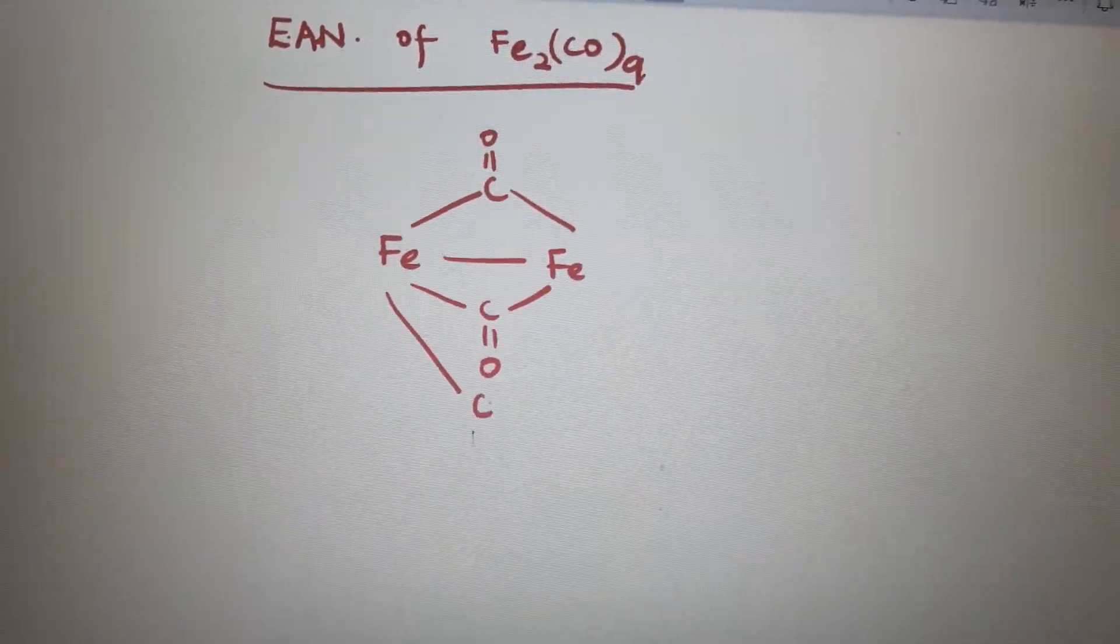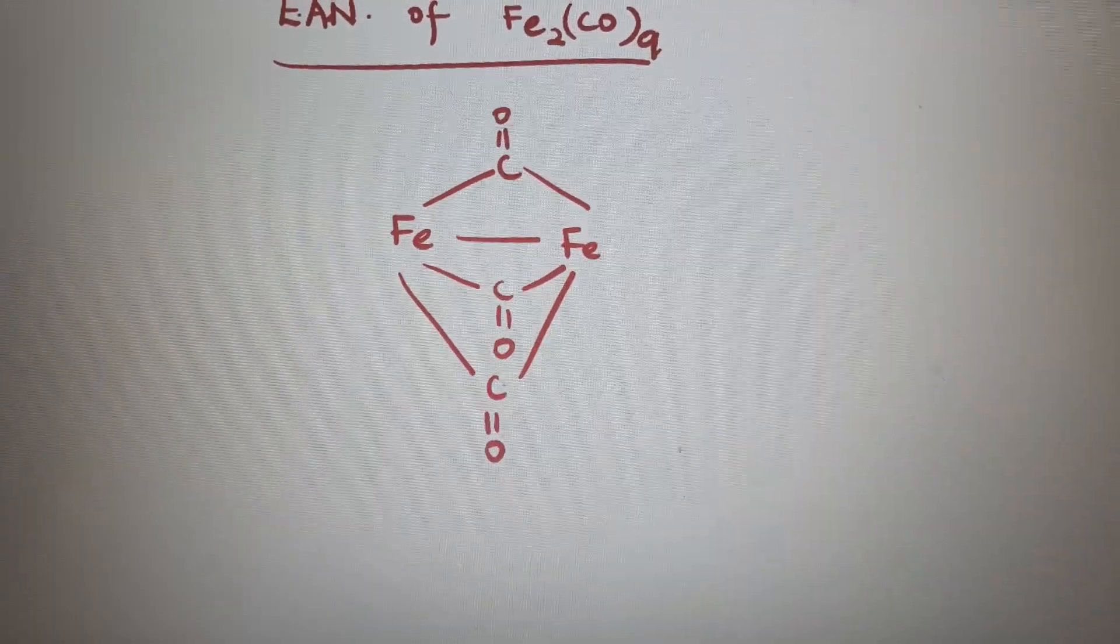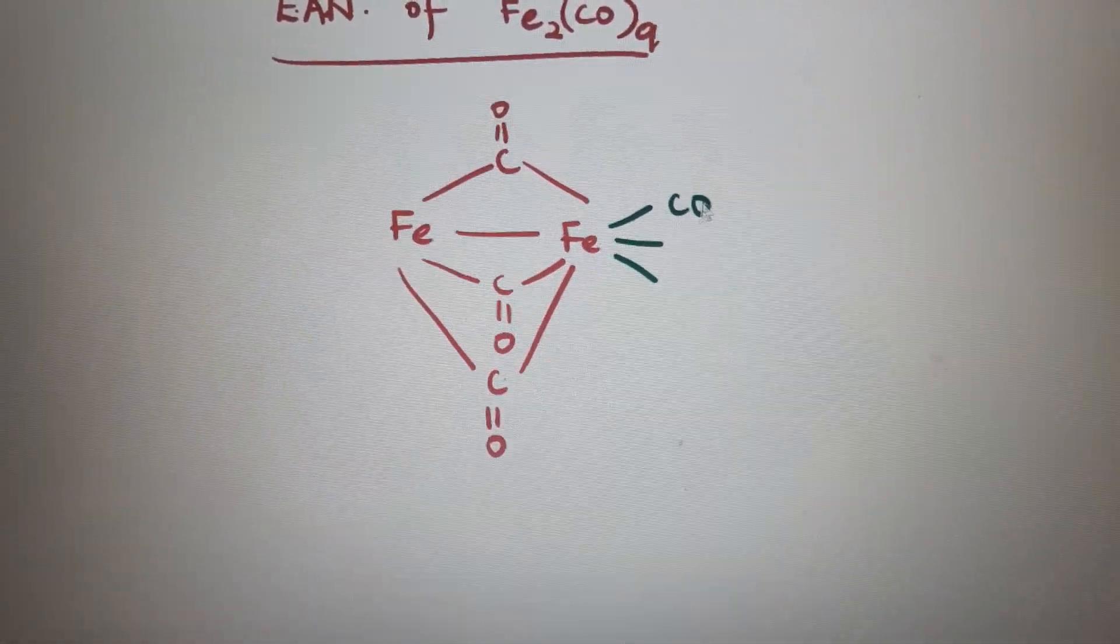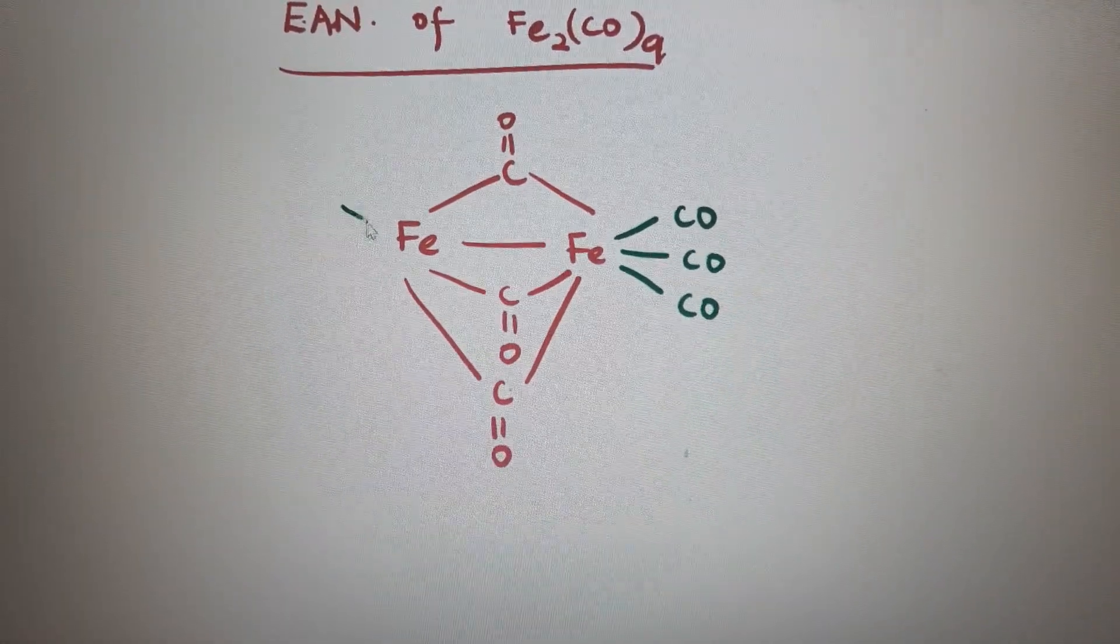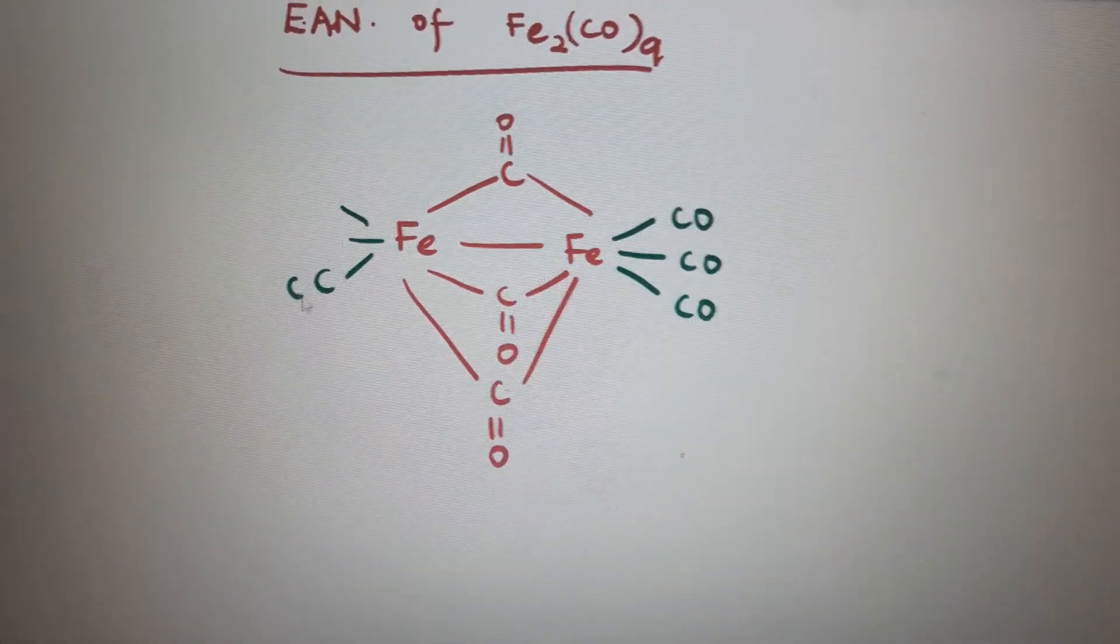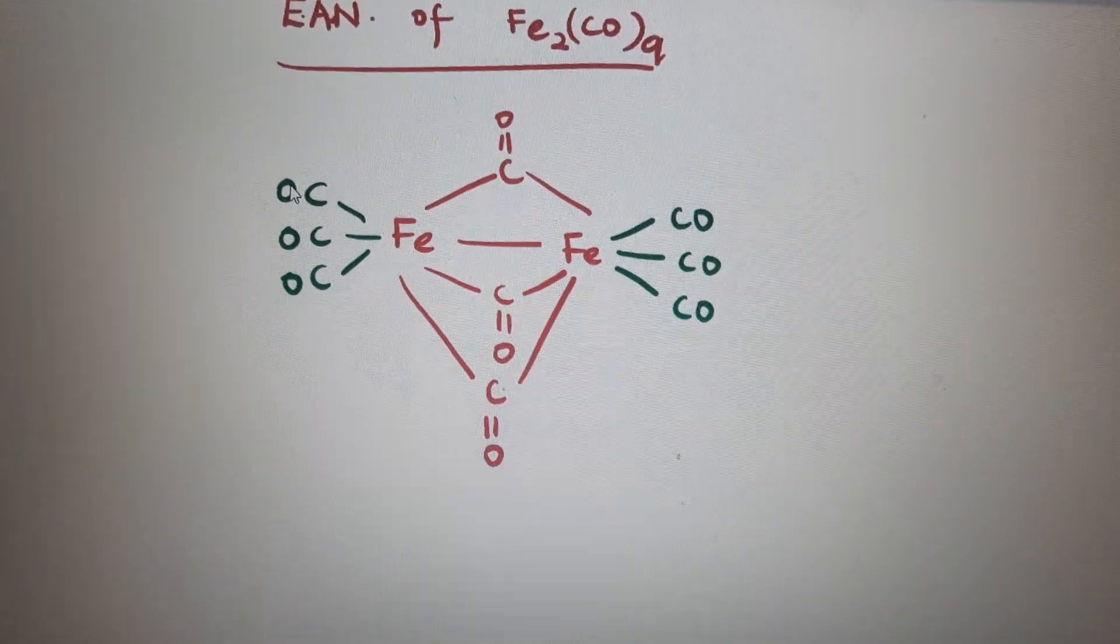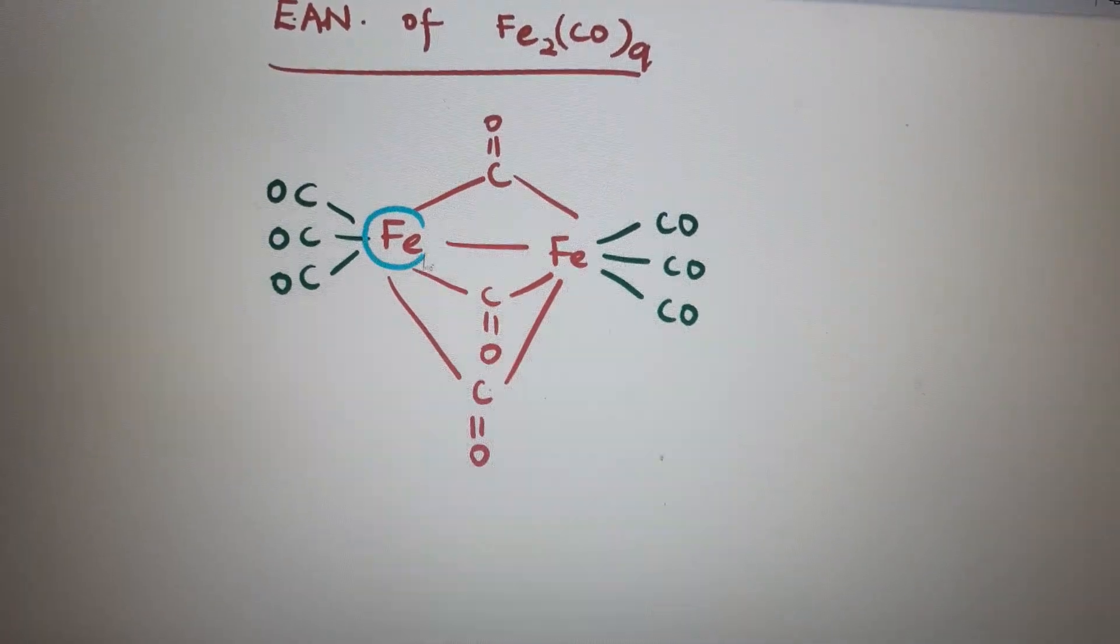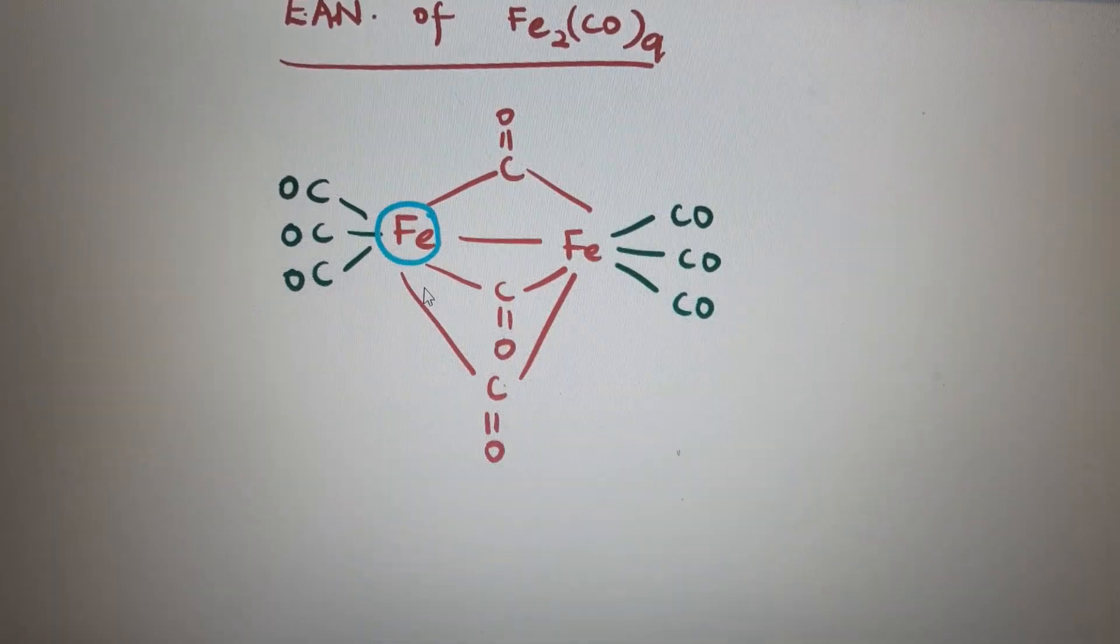Bridged ligands in this way and each iron having three terminal CO ligands, three terminal CO. So around each iron, three plus four, seven bonds are there.